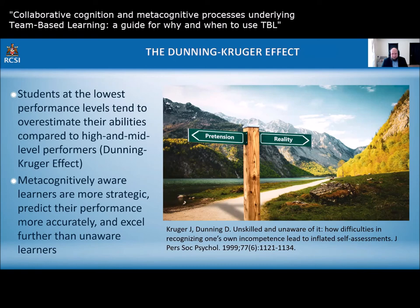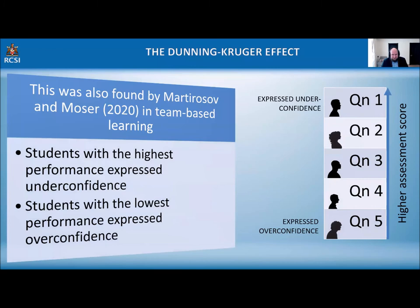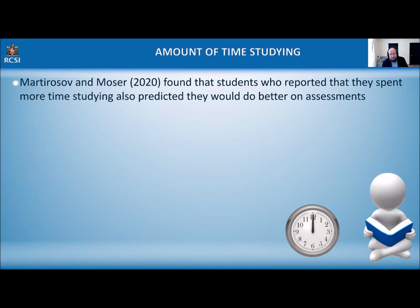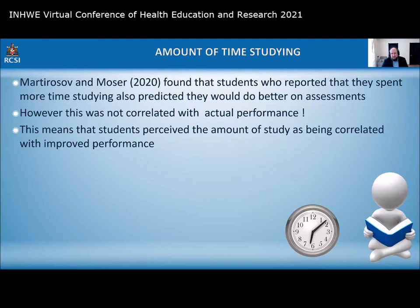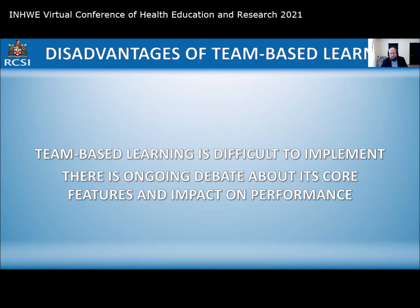An interesting effect is the Dunning-Kruger effect, where students at the lowest performance levels tend to overestimate their abilities compared to high and mid-level performers. This was found in the Maturosov and Mosa study (October 2020): students with the highest performance expressed underconfidence, and students with the lowest performance expressed overconfidence. The same group also found that students who reported spending more time studying predicted they would do better on assessments, but this was not actually correlated with actual performance.